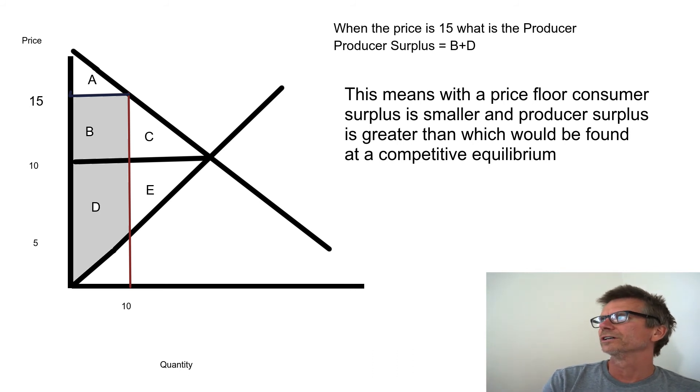Similarly, when the price is at 15, let's say there's a producer surplus of B and D. That's when you also have a government price floor. This means with a price floor, consumer surplus is smaller and producer surplus is greater than it would be found at competitive equilibrium.